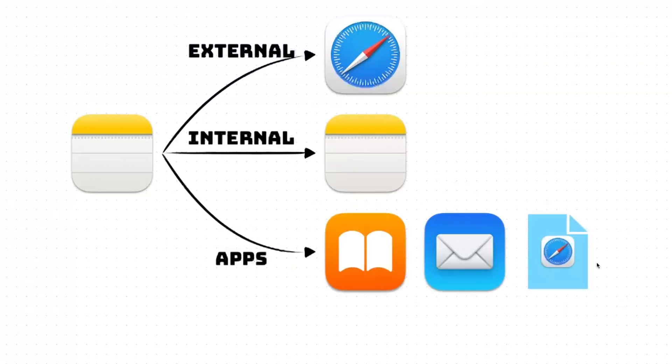Just as an overview, external links are the typical links you would have to URLs and web pages. Internal links point to other notes in Apple Notes and that's a great addition from iOS 17. And then app links are sort of special links to specific apps that can do something additional into Apple Notes. I'm going to demonstrate this later on. Let's get started from the very basic: external links.